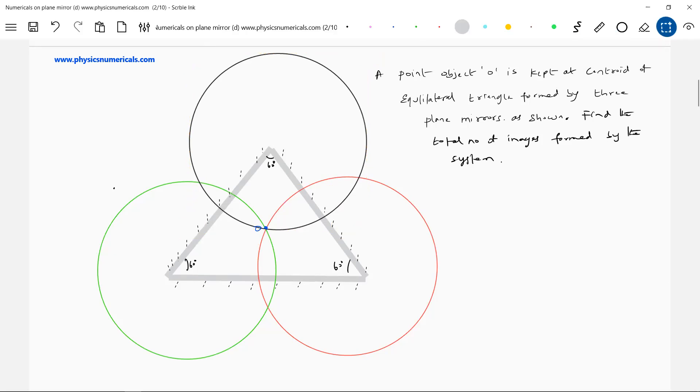Like this, let me draw the circles, then we'll go for the tracing of images. Let me start with images. So this is the object what we have.